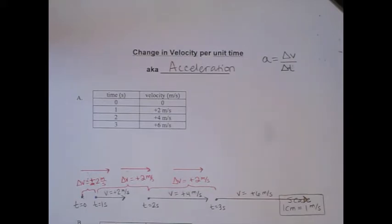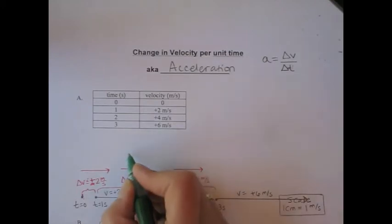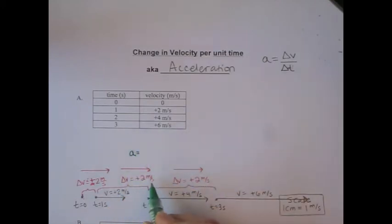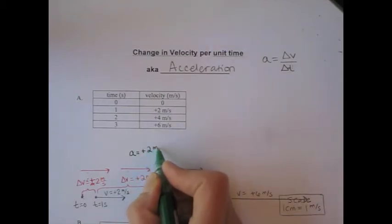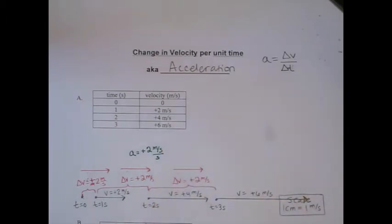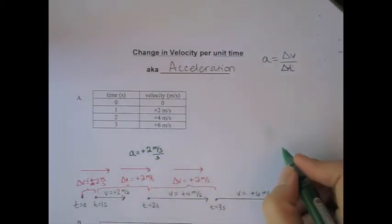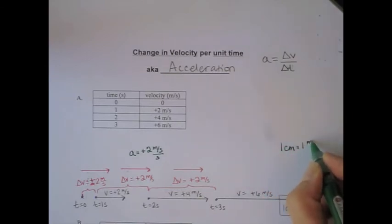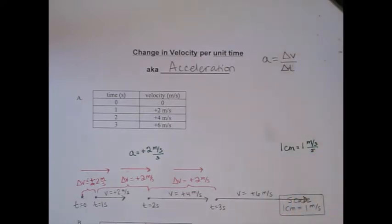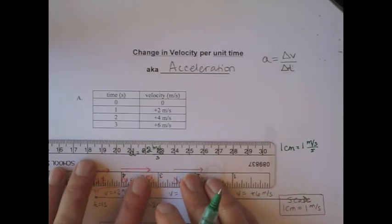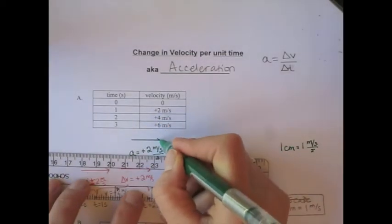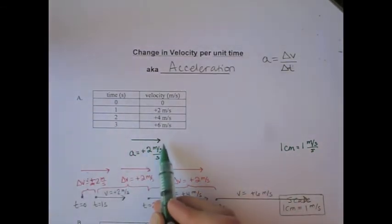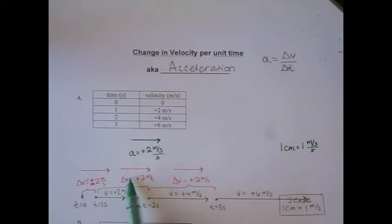Now we want to figure out the acceleration. Acceleration is the change in velocity per second. The change in velocity was two meters per second in every second, so the acceleration for this motion is two meters per second per second. We can also draw the acceleration as a vector — using a scale of one centimeter equals one meter per second squared, we have an acceleration vector pointing to the right. The acceleration vector has the same direction as the change in velocity.